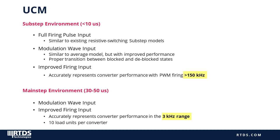Improved firing has a substantial effect on the UCM's performance. In the sub-step environment, we can model very high switching frequencies — over 150 kHz — without needing to drive the time step into the nanoseconds range. This means we get accurate representation of a great frequency range while remaining conscious of the computational burden and simulation hardware required. Even more impressively, improved firing means that for the first time, we can run converters in the main time step — say 30 microseconds — while still achieving full switching detail in the 2 to 3 kHz range, implying huge savings in simulation hardware requirements.